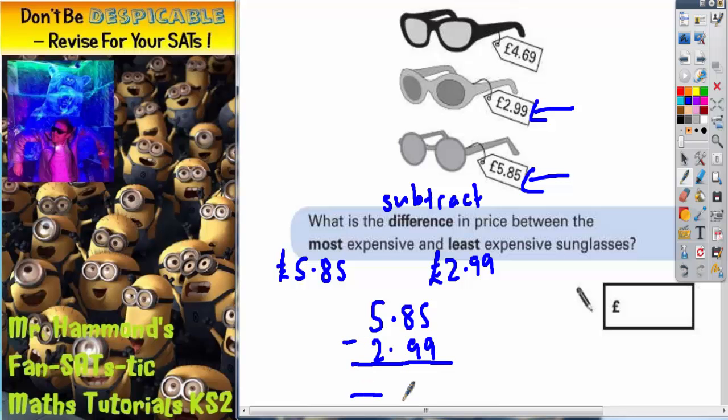And if we can do that accurately we'll have our answer. So five take away nine we can't do, so we borrow one. That becomes seven and this becomes 15. 15 take away nine is six. Seven take away nine we can't do, so we need to borrow again.